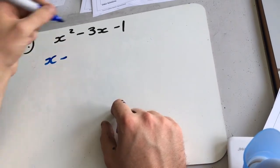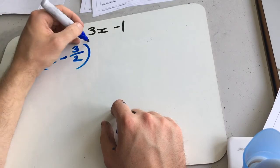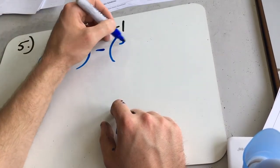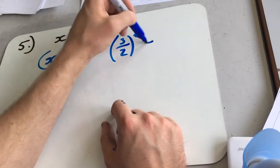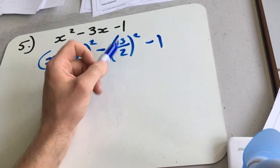So x minus b over 2 is now going to be 3 over 2. Then we're going to have to subtract 3 over 2 all squared. So 3 over 2 squared, remember, square the top, square the bottom from when we did indices.